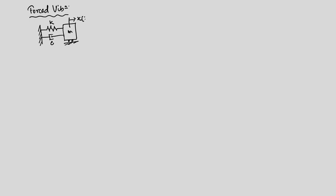Let us continue our discussion on forced vibration. If you recall, we solve the problem when we have a mass-spring-dashpot system and we excite that with a harmonic force. That is the system we consider: stiffness, damping constant, and mass, and we apply a force causing displacement X of T. The force is F of T, and the equation of motion is M X-double-dot plus C X-dot plus K X equals F of T.